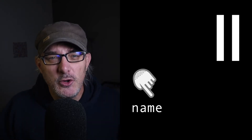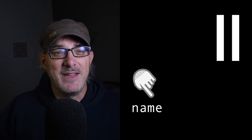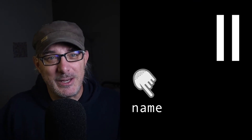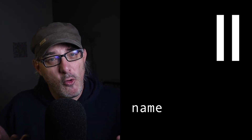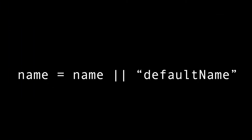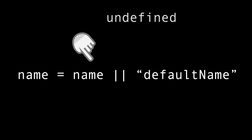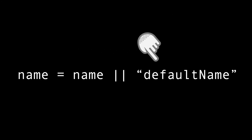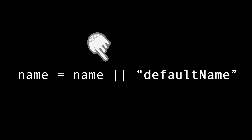Imagine we have a variable, for example, name, and we don't know whether it is set or not. If it's not set, we want to set a default value. The OR operator allows us to write: name = name OR defaultName. If name is undefined, null, or an empty string, the operator will return the second term, defaultName. If the name is defined, it will be returned by the operator. In this way, we've set a default value to name if it's not set.